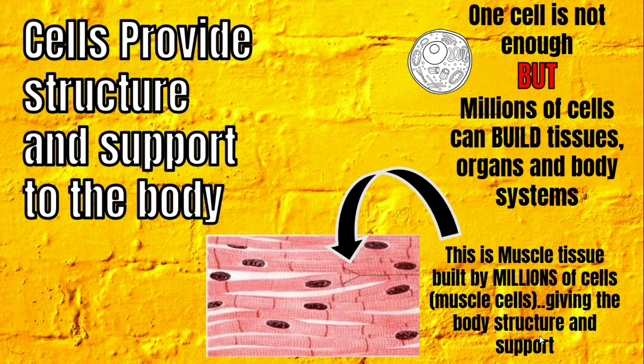Think about if you had no muscles at all — they just disappeared. You would basically be skin and bones. Your muscles give you filling, they make you look fuller, and they give your body more structure. They also help you sit up and move. Without muscles, you wouldn't be able to sit up or move at all. So your cells, since they build your muscles and other things, provide structure and support to the body.